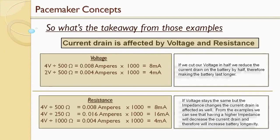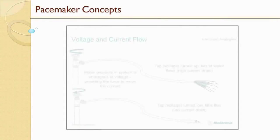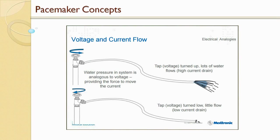One of the best analogies used to explain Ohm's Law and how it applies to pacemakers is comparing a pacemaker system to a water tap or faucet with a hose attached to it. Water pressure in the system is analogous to voltage, providing the force to move the current. The water represents the current. When we open up the tap, it's like turning up the voltage — lots of water flows out and you have high current drain. But if we close that tap most of the way, the voltage is turned low, so there's little flow or a low current drain.